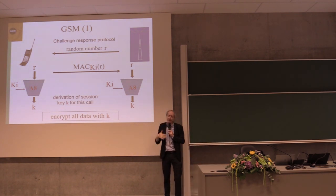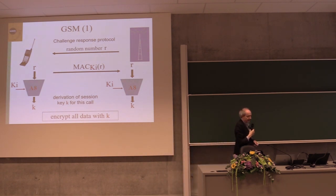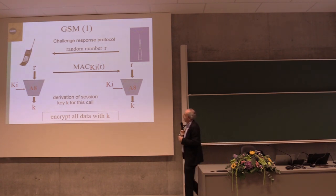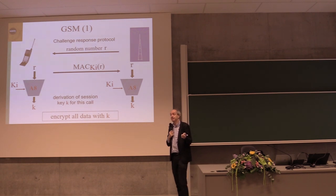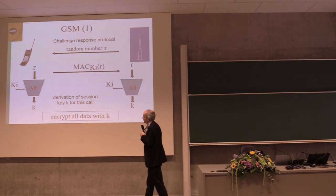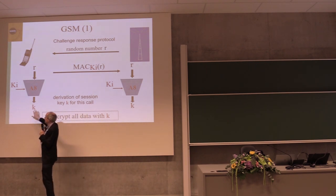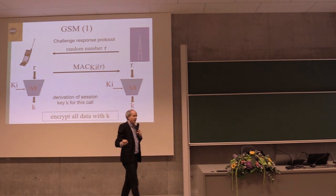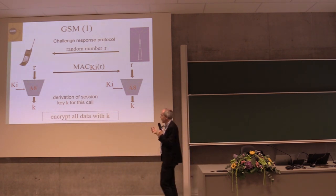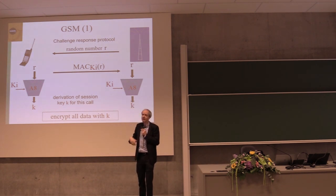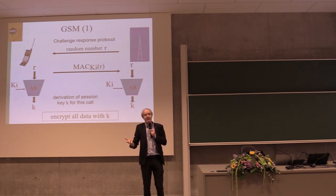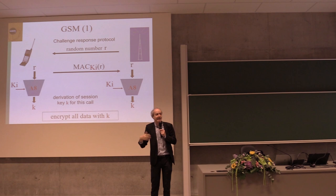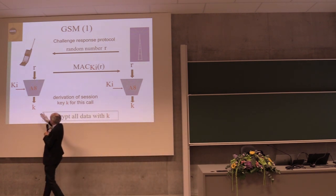From 3G on, you use authenticated encryption, so you also MAC all communication, which is important for SMS and data. In GSM this was not foreseen. The MAC algorithm A3 and key derivation A8 are in your SIM card and are operator-specific, while the encryption algorithm A5 is in the phone. This is already a reason to use session keys — you don't want to use the same key KI for encrypting all your data, because that makes life for cryptanalysts too easy.